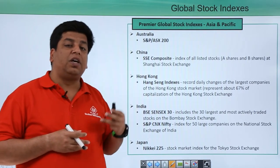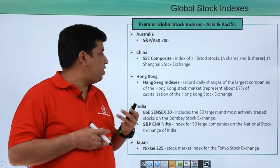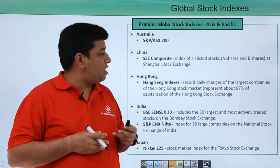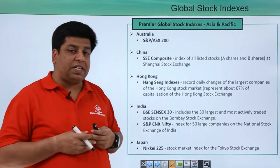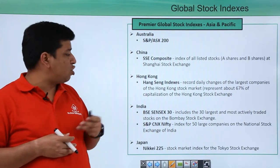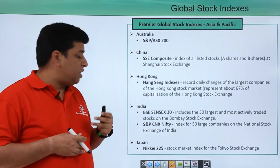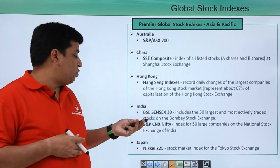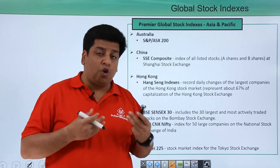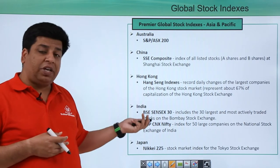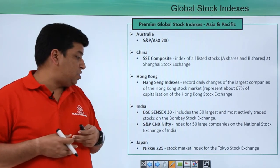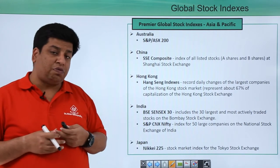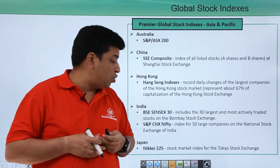In Australia, you have the S&P 200, or Australian Exchange 200. In China, you have the SSE, which is the Shanghai Stock Exchange index of all listed stocks — both A and B shares, the different categories of shares. In Hong Kong, you have the Hang Seng Index. In India, the BSE Sensex, or sensitivity index, with its 30 stocks, is counted as one of the global indexes. Another from India is the Nifty, which comprises 50 large companies on the National Stock Exchange of India. In Japan, it is the Nikkei 225, the stock market index for the Tokyo Stock Exchange.